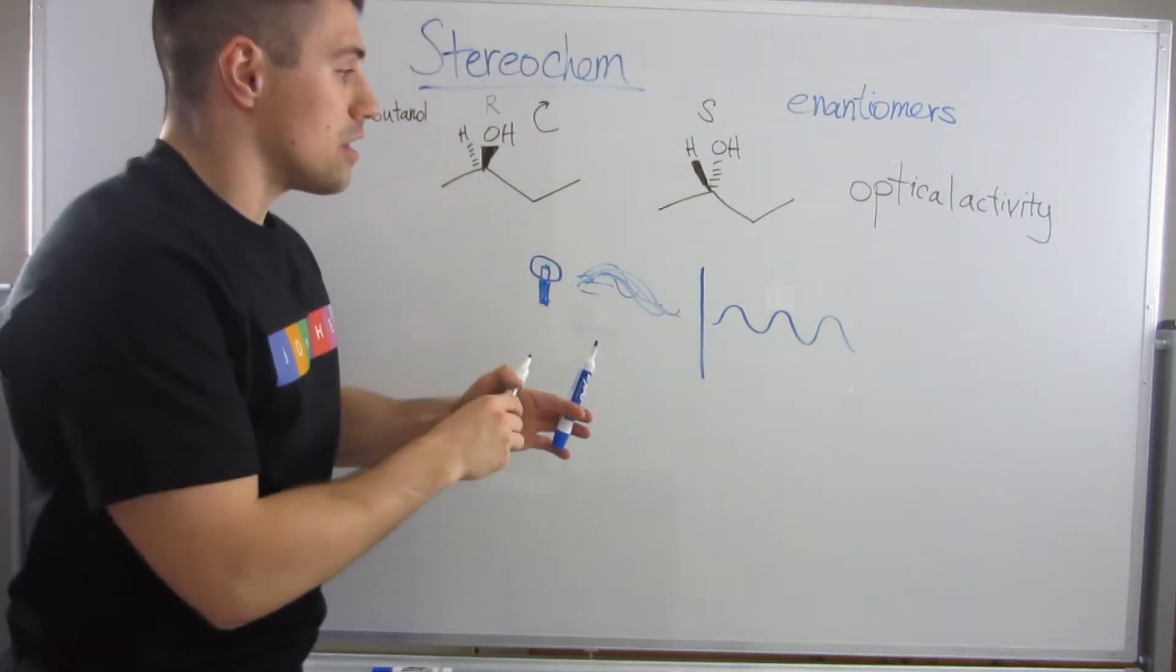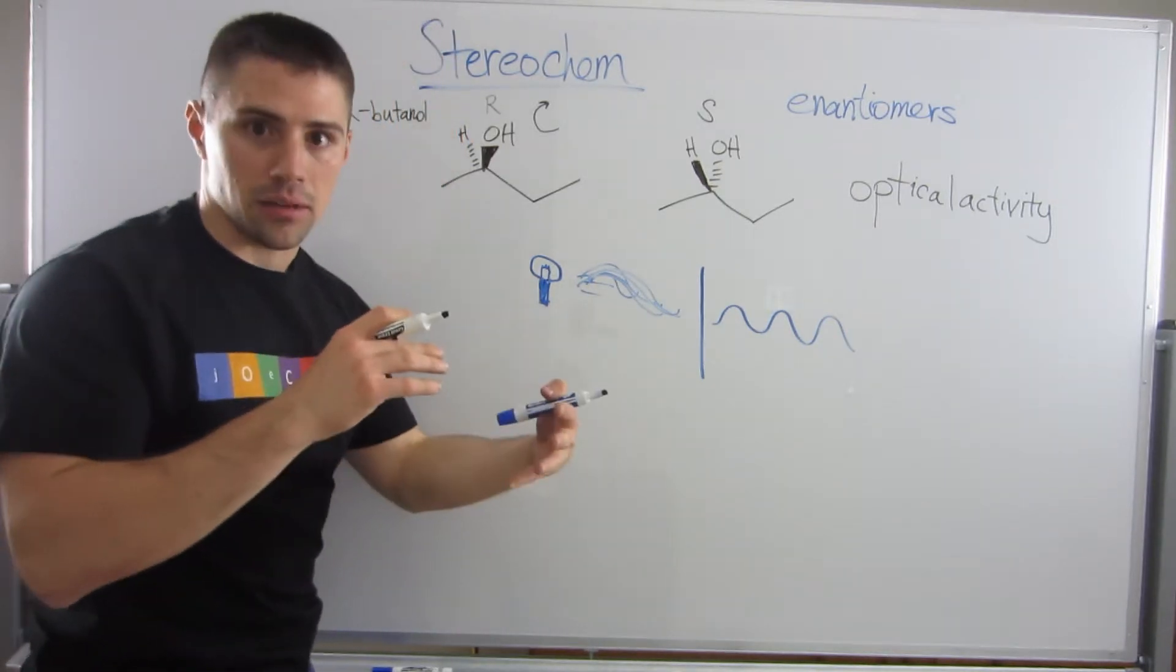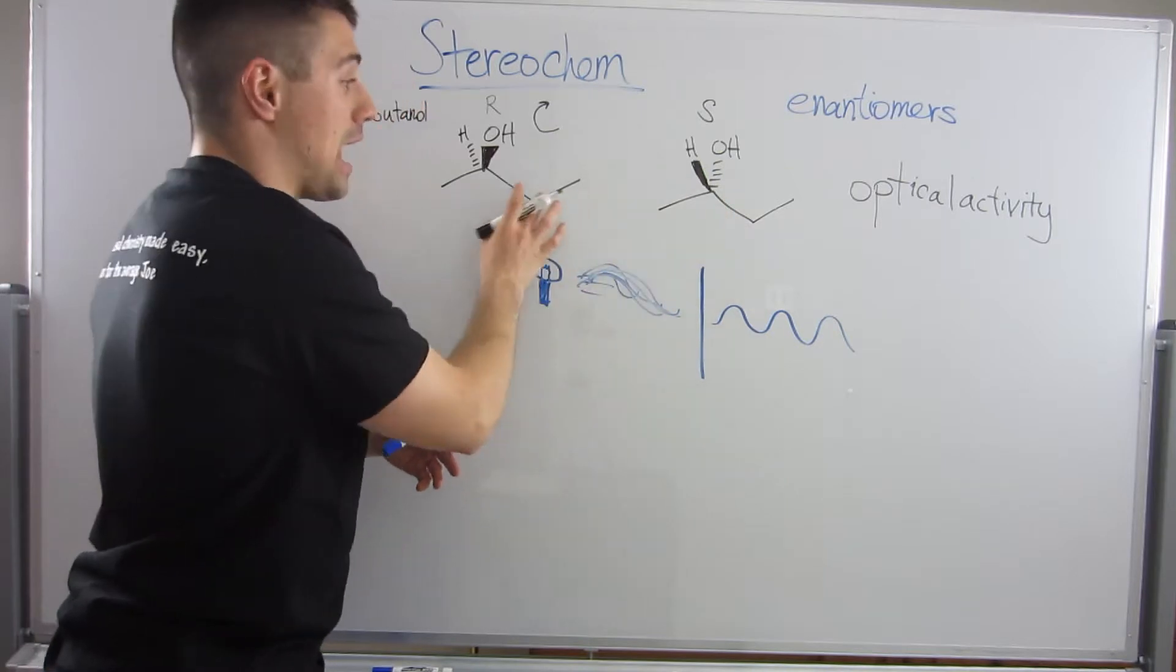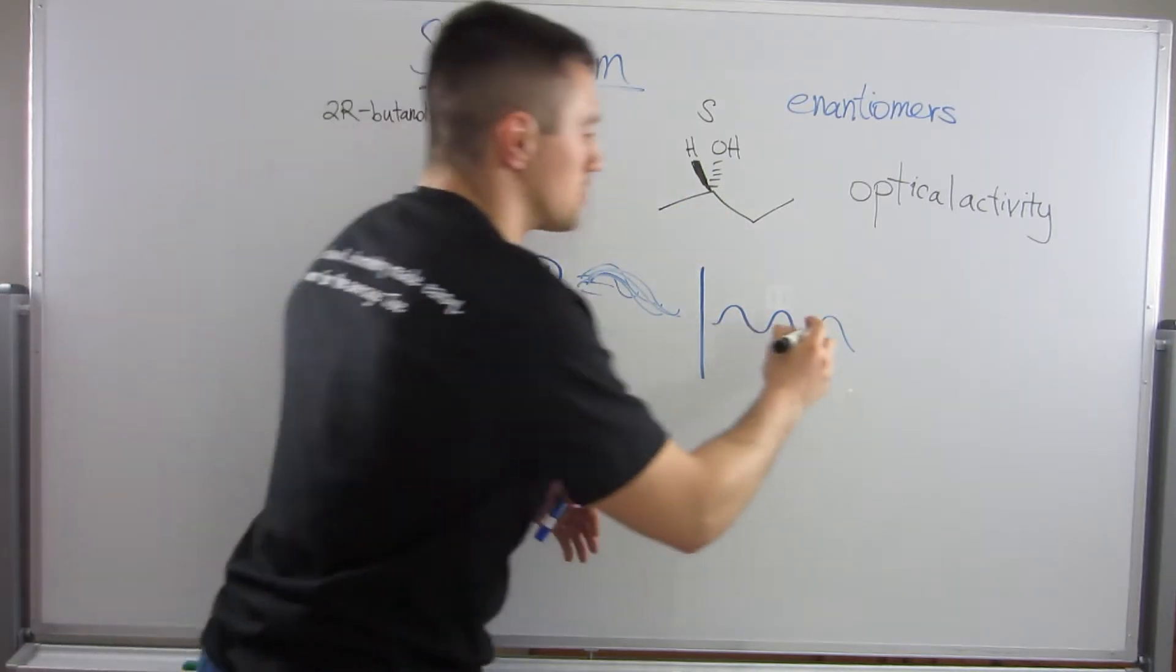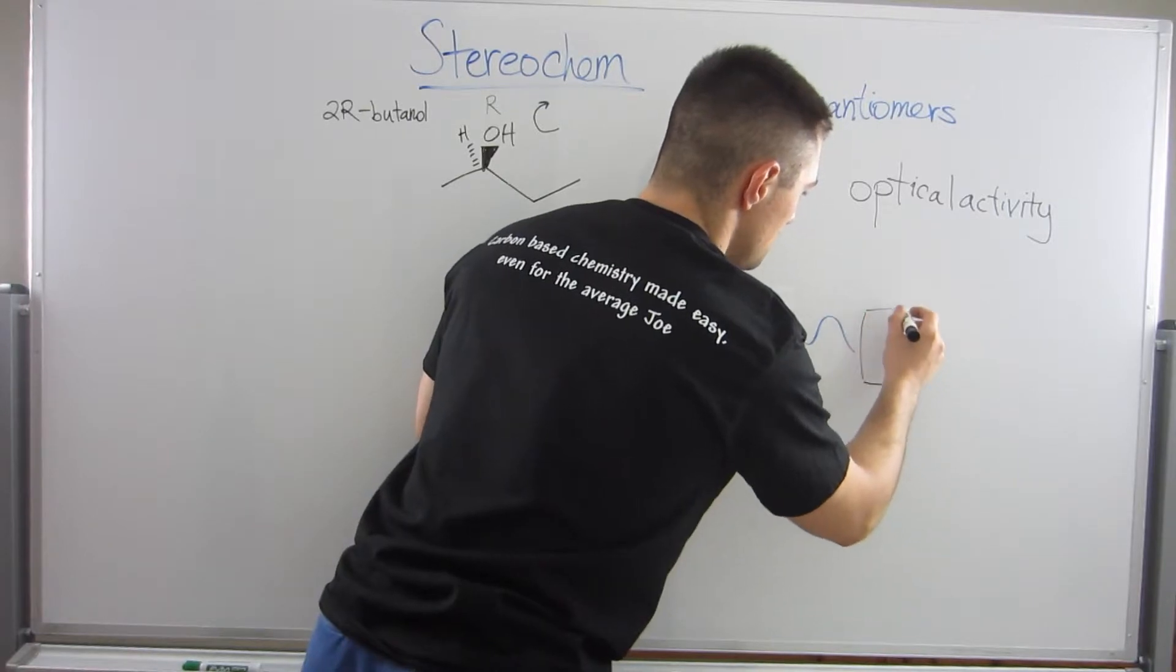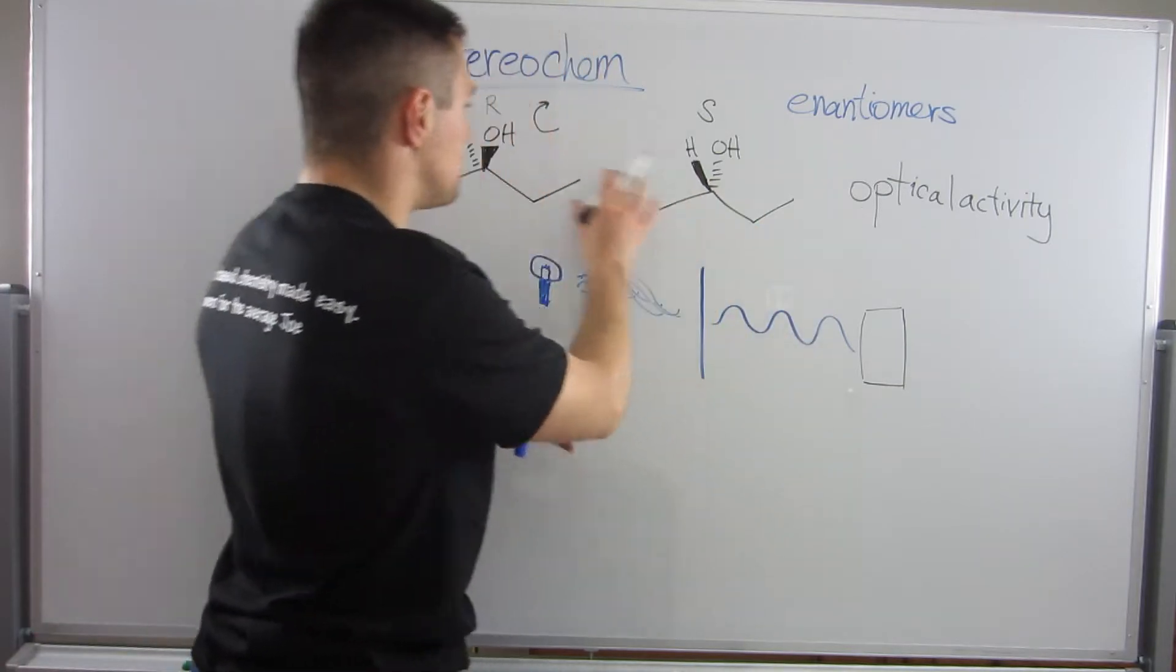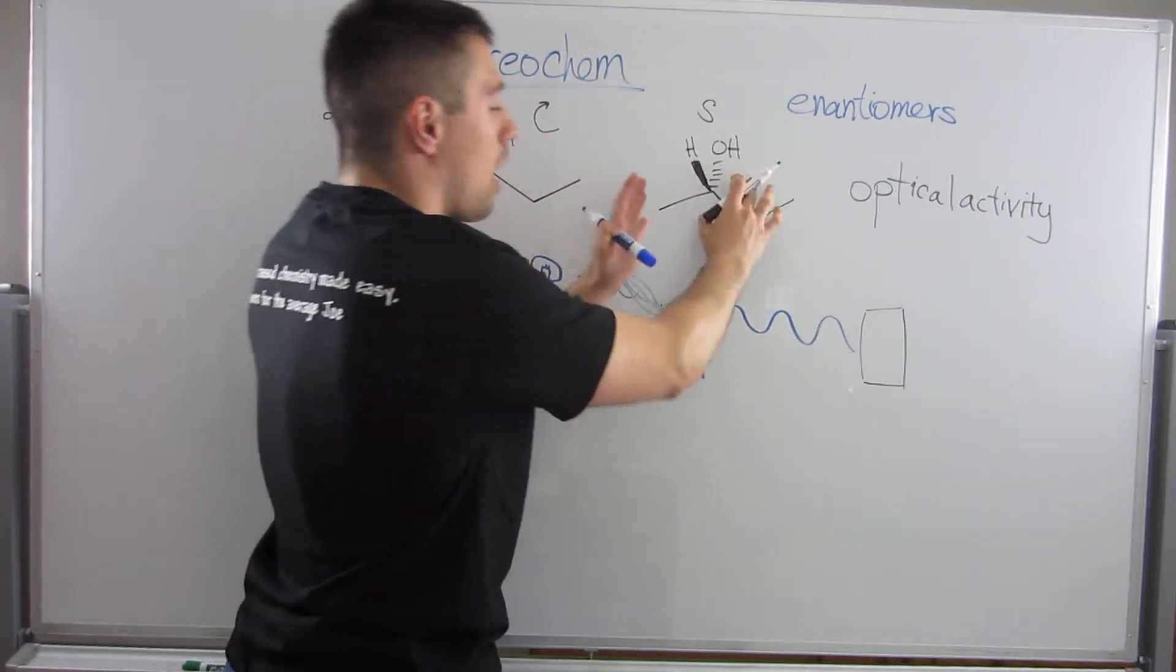So from there, the light will then travel through some type of medium where a compound is contained. So almost just think of like, this is going to be also poorly drawn. Some thin container that has either compound. Let's just pick this one first.